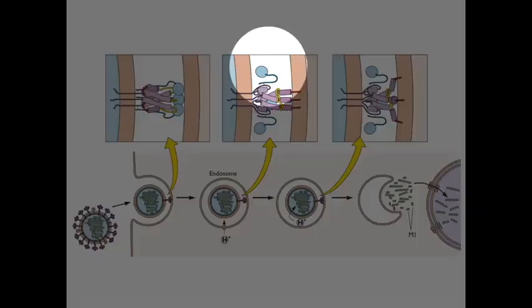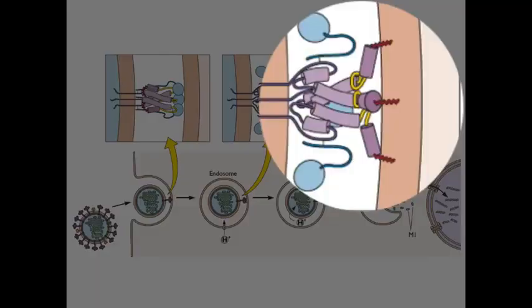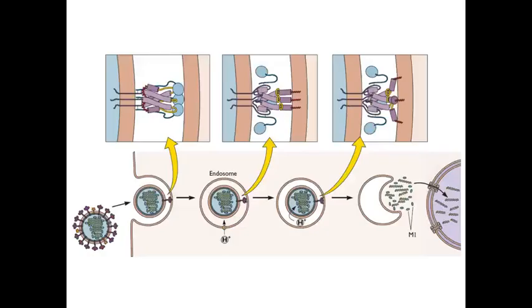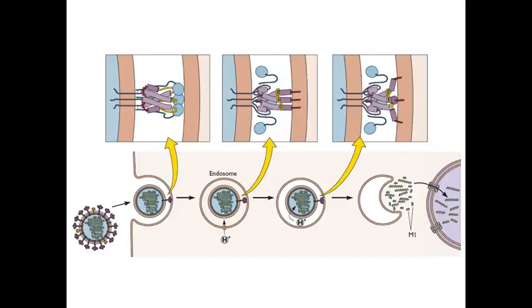The heads of the HA fall away, and then this entire HA begins to hairpin. It bends, it draws the two molecules together, and eventually the virus membrane and the endosome membrane fuses, and the viral ribonucleoprotein can exit the capsid or exit the virus particle.